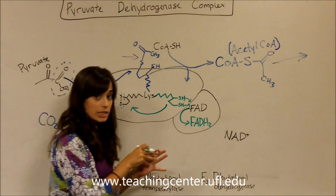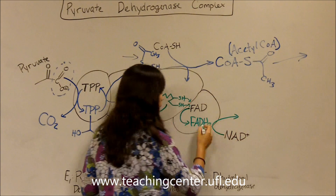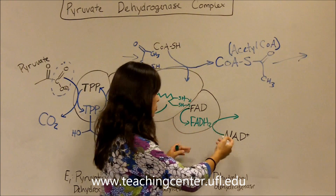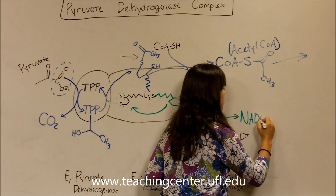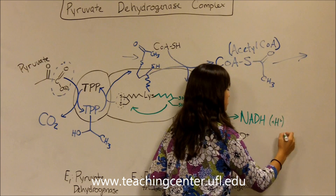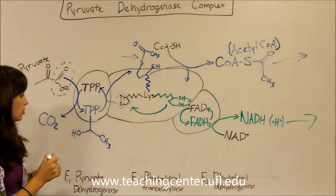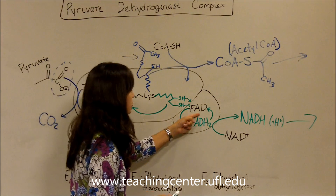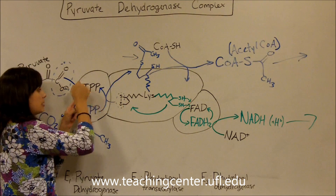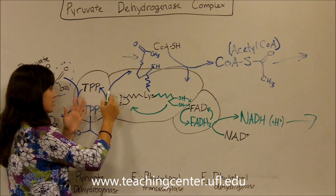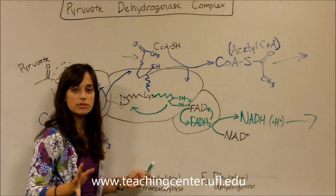Now we're stuck with FADH2 bound to the enzyme — it can't float off to the electron transport chain. We need to regenerate FAD. Luckily, NAD+ in solution can come over and oxidize FADH2 back to FAD, forming NADH and an H+, which can float off into solution just like acetyl-CoA did. Now we've regenerated FAD, regenerated lipoic acid with its disulfide, and regenerated TPP. Another pyruvate can flow in and go straight through this mechanism.